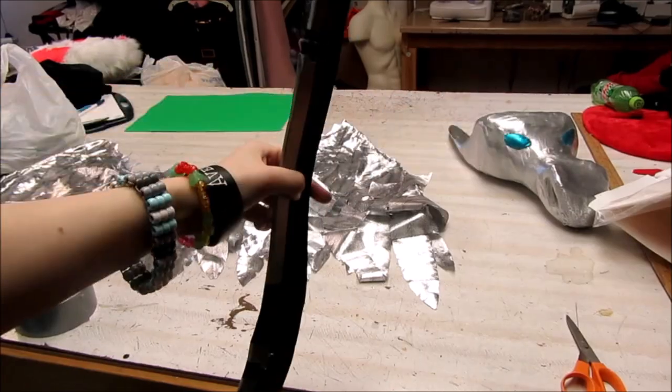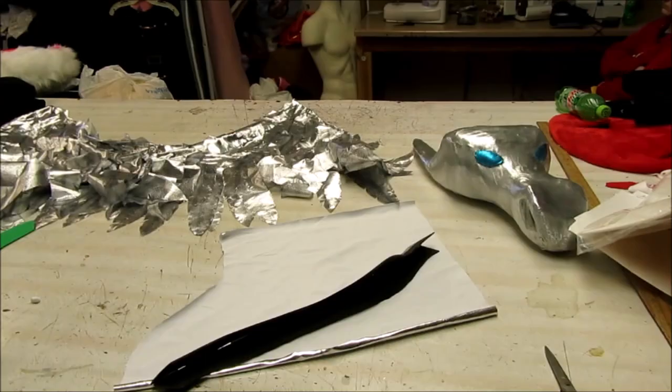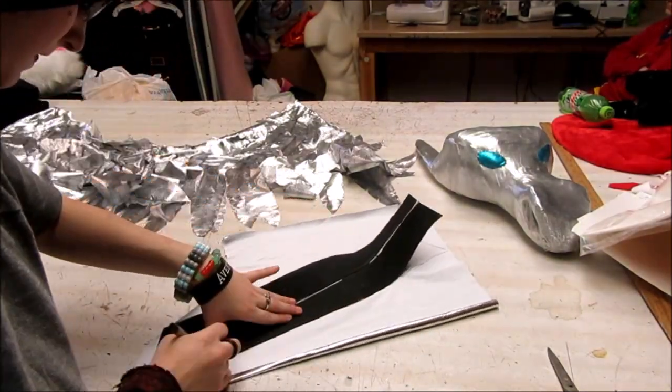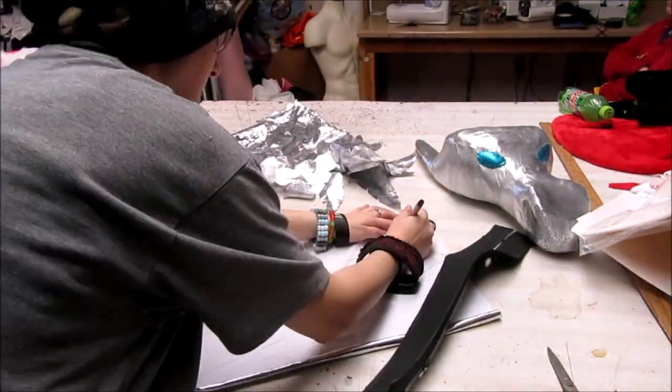Then, it was time to build the weird cover piece that hangs over the top of the wings. I just taped some foam strips together and covered the outside with my silver, before hand sewing them to the wings on both sides.